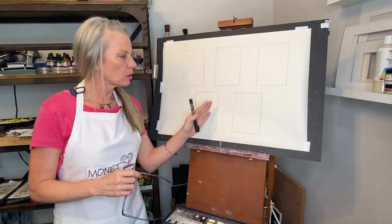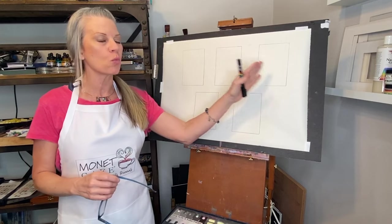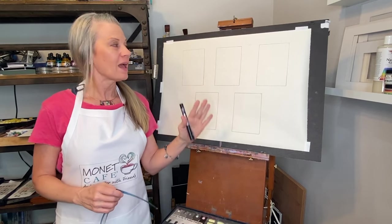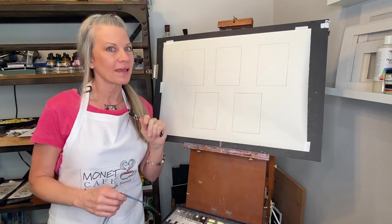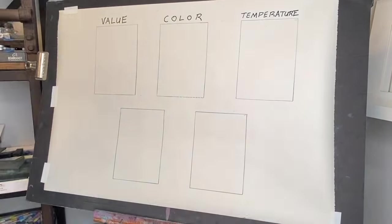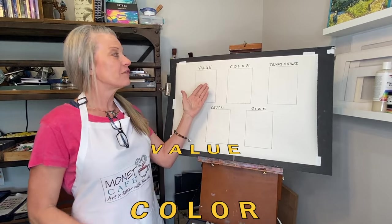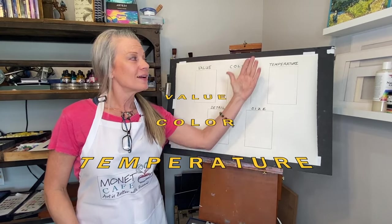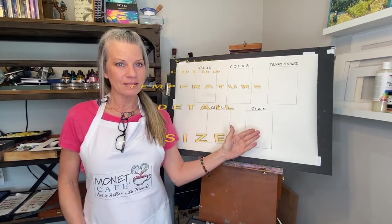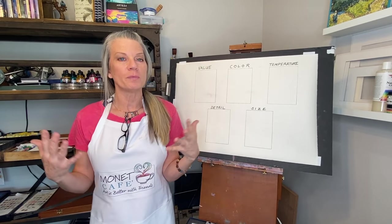I've made five equal frames to share each of these easy methods to create depth, and I'm going to label them right now. Here they are: value, color, temperature, detail, and size.